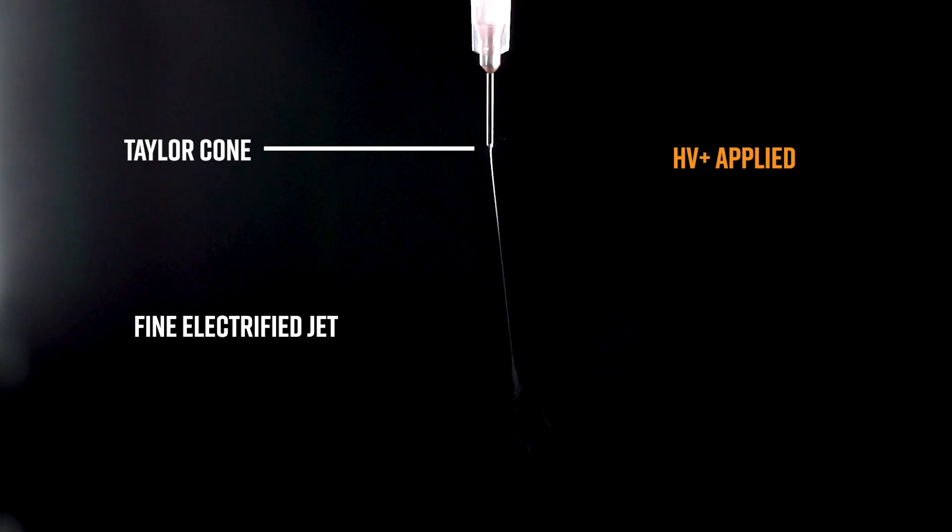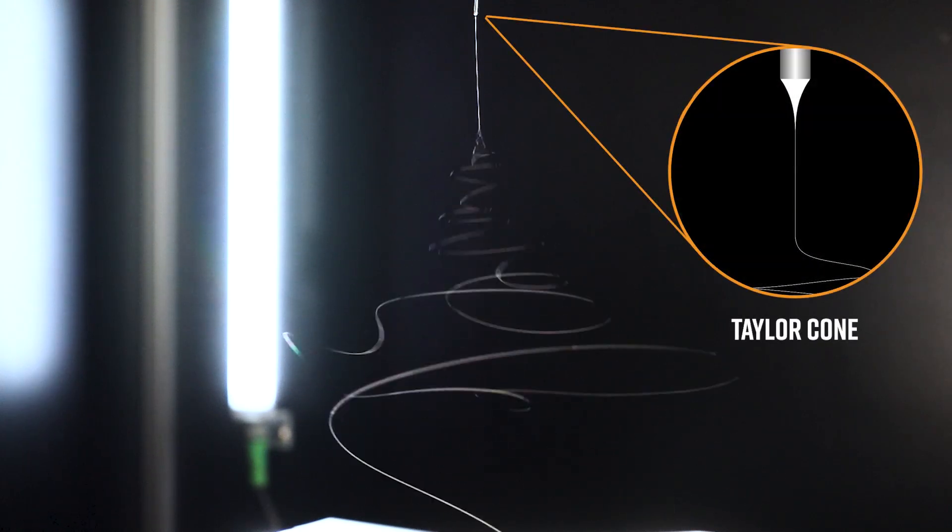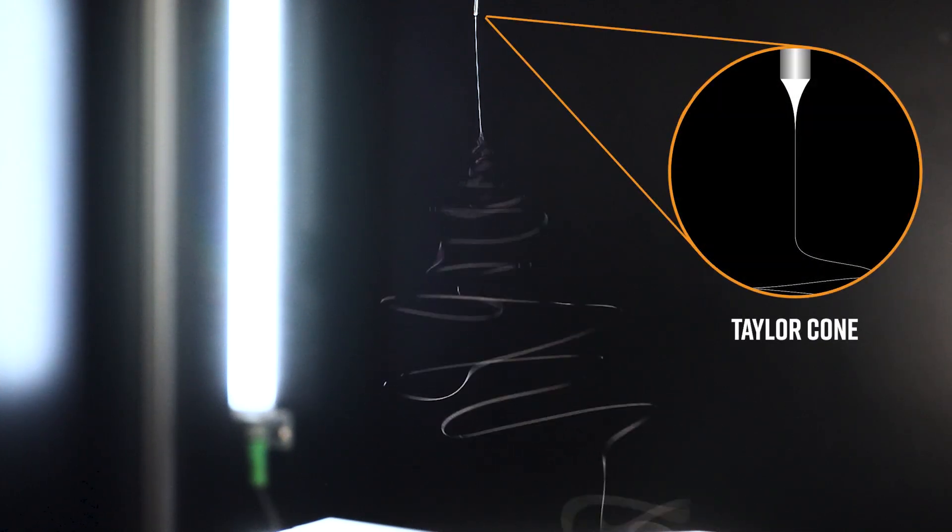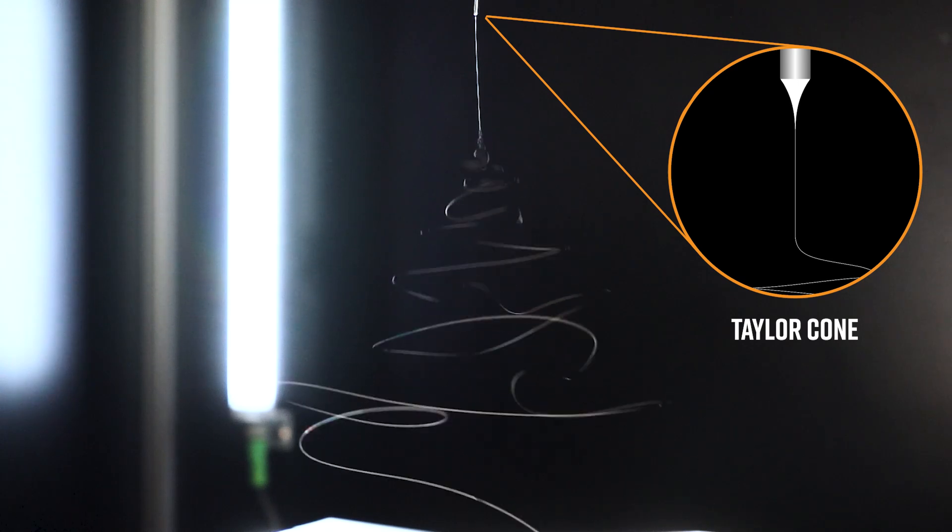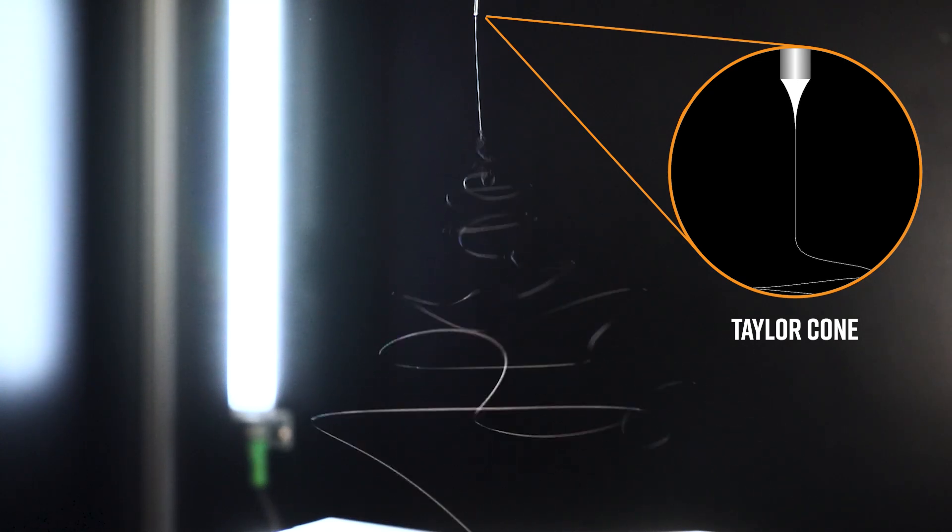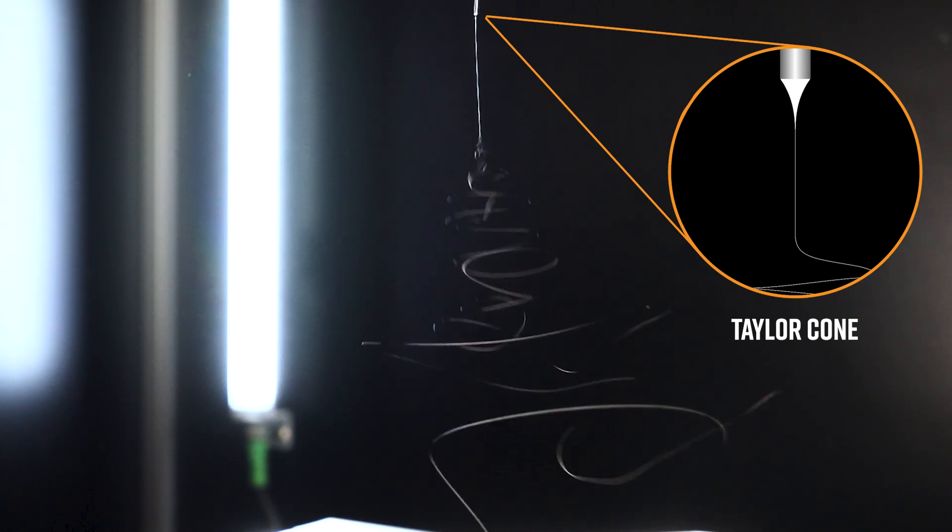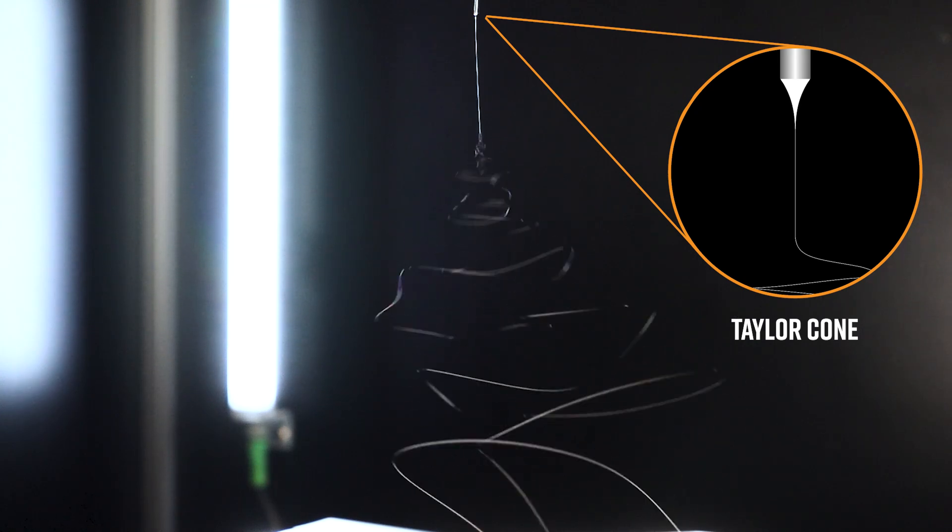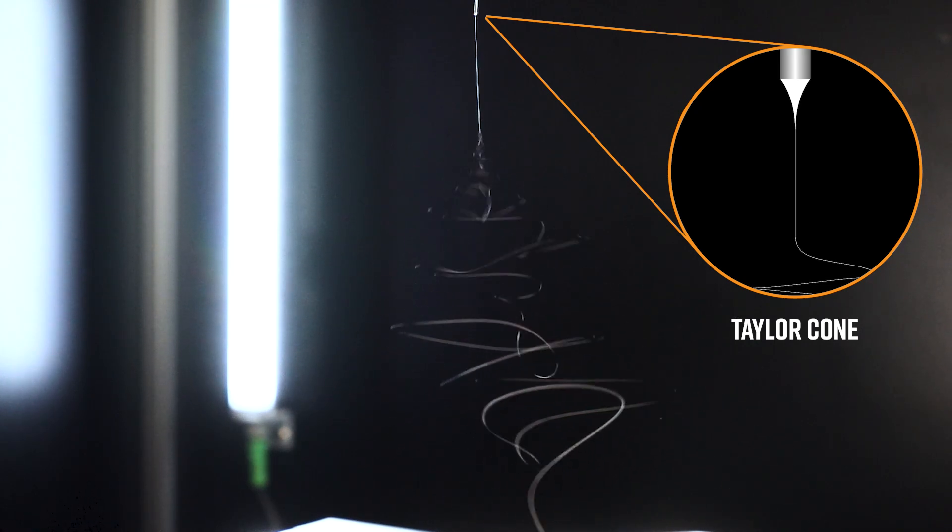This cone shape is known as the Taylor cone, and it is highly characteristic of the electrospinning process. It can tell you a lot about the quality of your electrospinning, including your solution and what parameters you may need to change during your process. Be sure to watch our next video on the importance of the Taylor cone for more information on this.